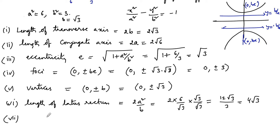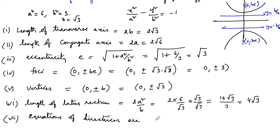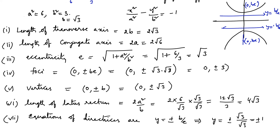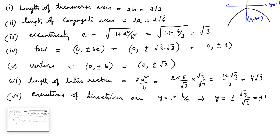Finally, the equations of the directrices are y equals ±b/e, which equals ±√3/√3, so y equals ±1. The equations of the directrices are y equals plus or minus 1.